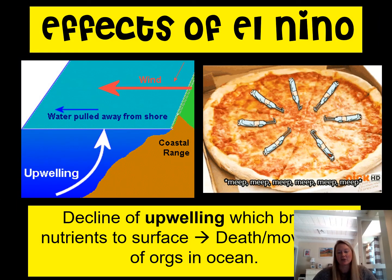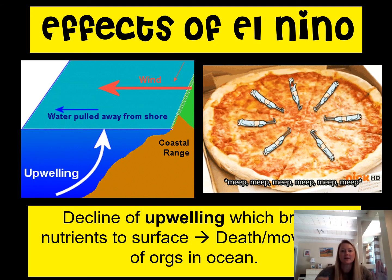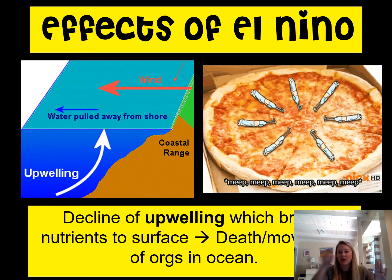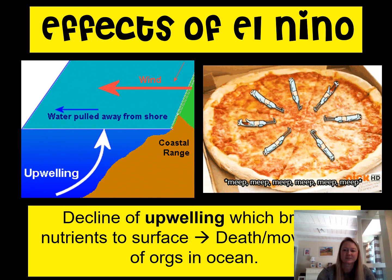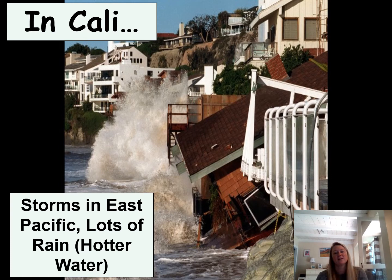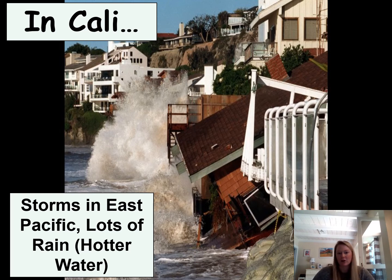Some of the effects of El Niño: when the water stops moving, you lose upwelling — a cycle where warm water moves out and is replaced by cold, nutrient-rich water. Without that, organisms depending on those nutrients can't get them, leading to many deaths in marine organisms. In California, an El Niño year brings tons of rain, which can lead to mudslides, erosion, and house destruction along the coast.